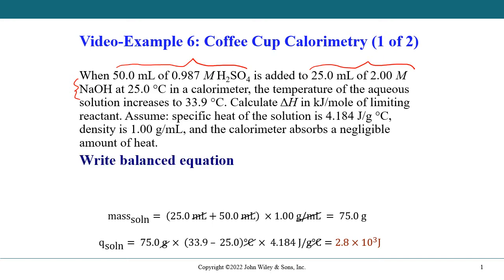So if we write the balanced chemical equation, we're going to get the following where we see we have a 2 to 1 mole ratio. So we have 1 mole of sulfuric acid and 2 moles of your sodium hydroxide.